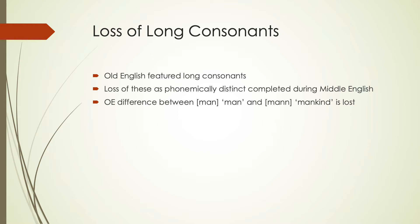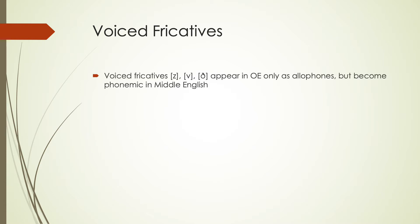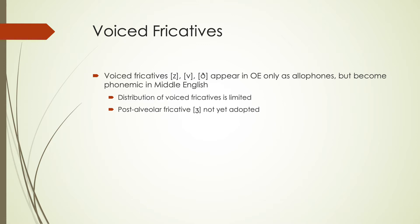One of the biggest consonant changes during this time was the introduction of voiced fricatives as phonemes. Voiced fricatives like /z/, /v/, and the voiced dental fricative appear in Old English just as allophones, but they become phonemic in Middle English. During this time the distribution is still relatively limited, and we don't yet see the post-alveolar fricative /ʒ/ adopted — that one comes in much later.